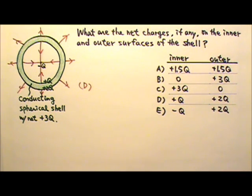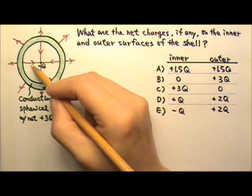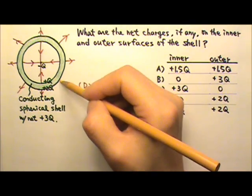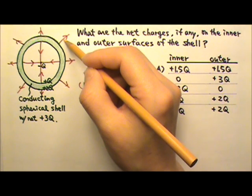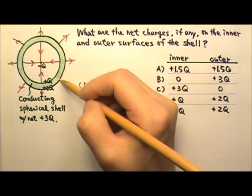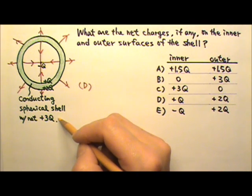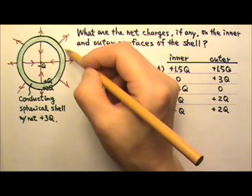Things should work out even if we combine charge distributions. For example, if I combine the inner and outer surfaces of the shell, there are 4 lines coming out of the inner surface and 8 lines coming out of the outer surface. For a total of 12 lines coming out of the shell.